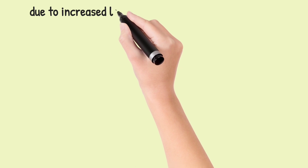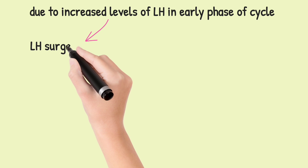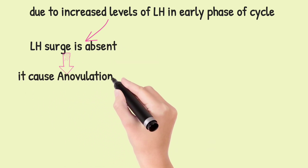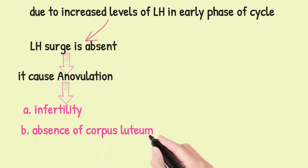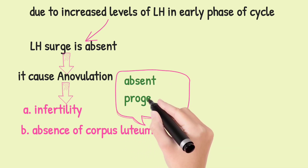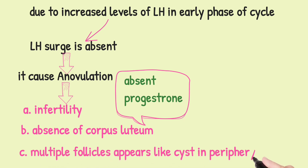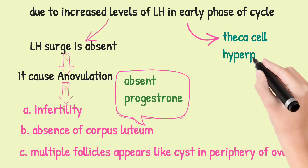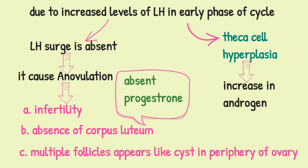Due to the increased level of luteinizing hormone in the early phase of the cycle, LH surge will not occur. This causes anovulation, which results in infertility and absence of corpus luteum. When corpus luteum is absent, progesterone will be absent. Anovulation also causes multiple follicles that appear like cysts in the periphery of the ovary. Increased LH also causes thecal cell hyperplasia, which further increases androgen production.